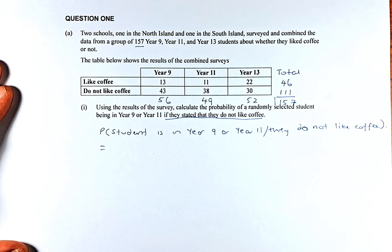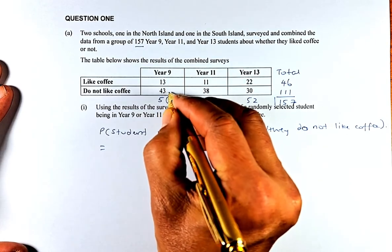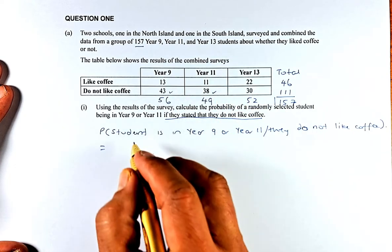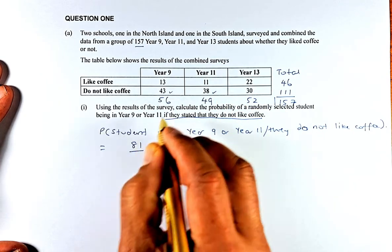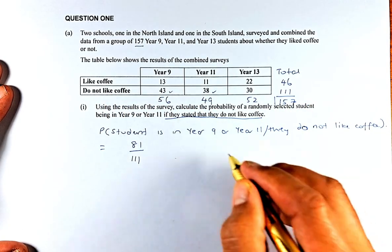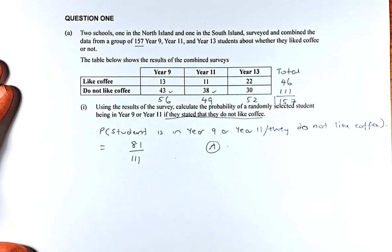We are not interested in the person who likes coffee. So what is the probability of a student in Year 9 or Year 11? Year 9 is 43 and Year 11 is 38. You're going to add them up: 43 plus 38 equals 81. And because we are only interested in do not like coffee, it's going to be over 111. And that is an achieve for this question.